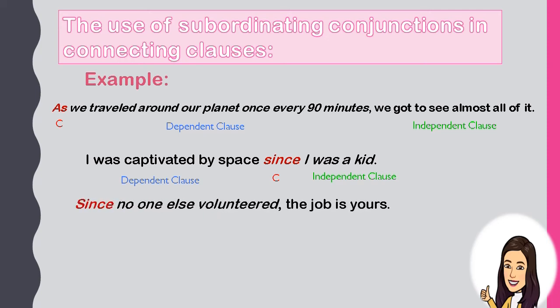Another example: 'Since no one else volunteered, the job is worse.' 'Since' is the subordinating conjunction. 'Since no one else volunteered' is the dependent clause. 'The job is worse' is the independent clause.